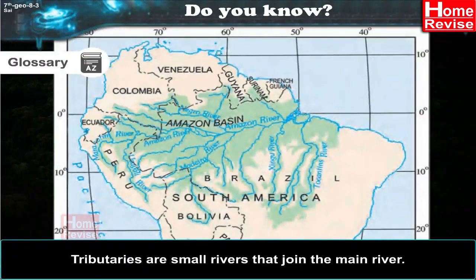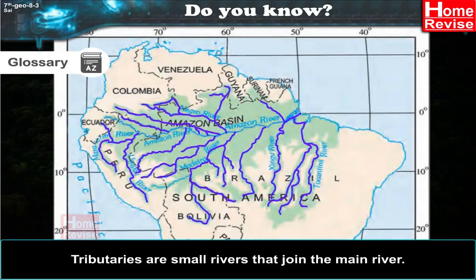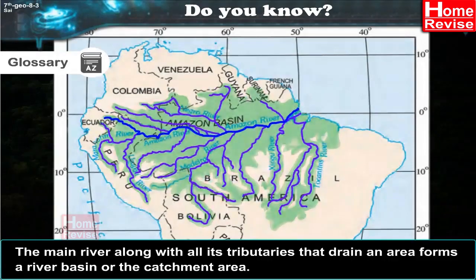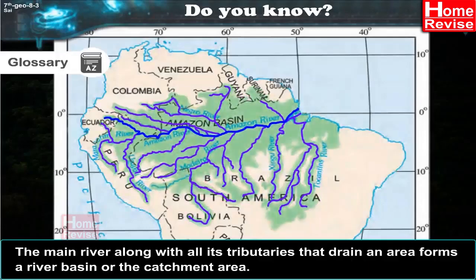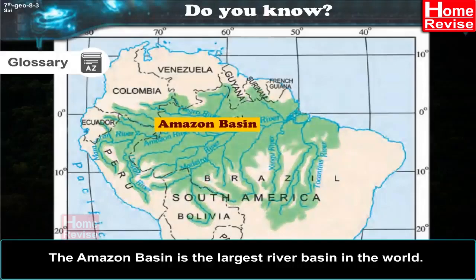Glossary: Tributaries are small rivers that join the main river. The main river along with all its tributaries that drain an area forms a river basin, or the catchment area. The Amazon Basin is the largest river basin in the world.